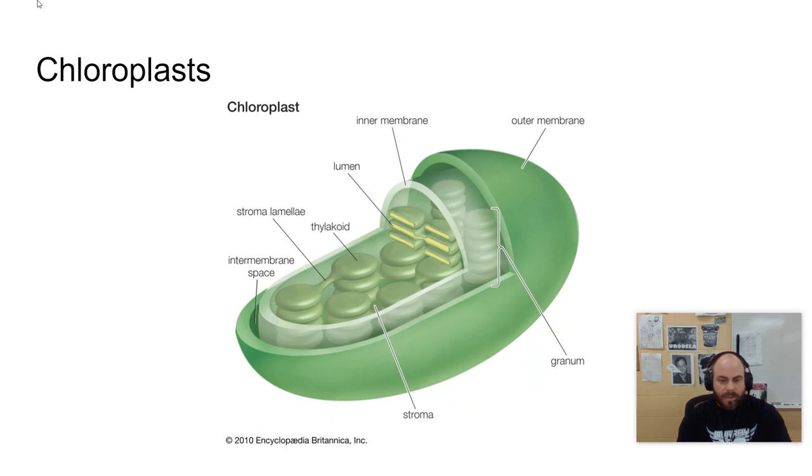And then lastly, we have the chloroplast. Chloroplast, as you can see, also has a double membrane structure. You will find these in eukaryotic cells like plants and algae, not found in animal cells. They have, again, that double outer membrane. Their job is that they do energy capture from the sun and use that energy from the sun to create sugar.